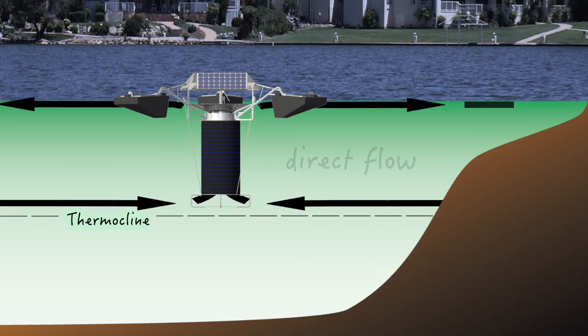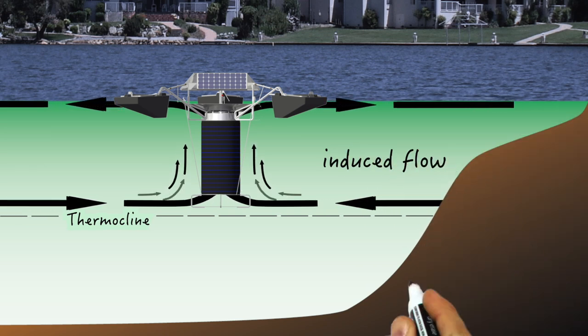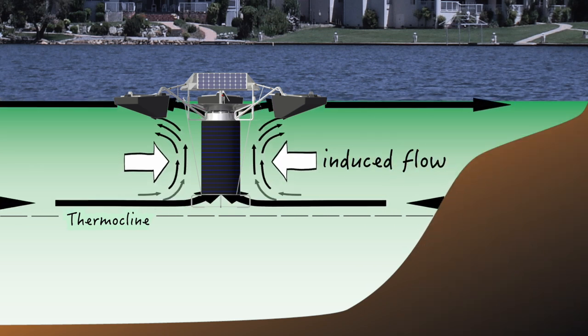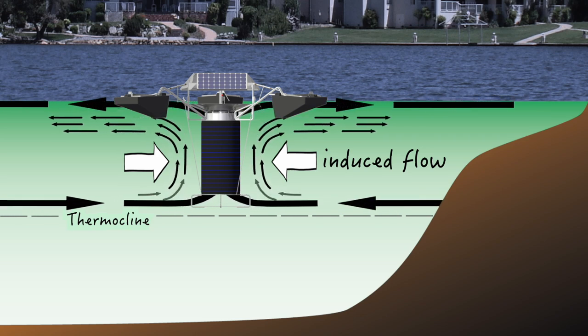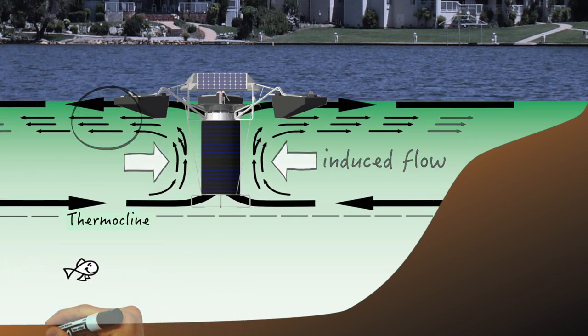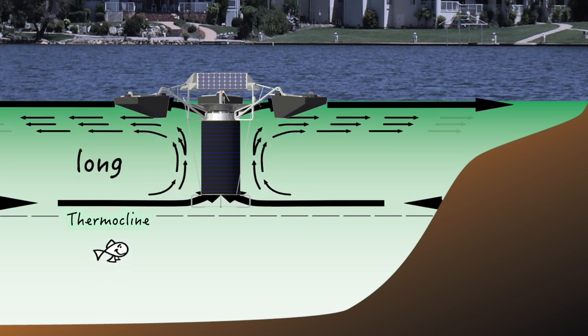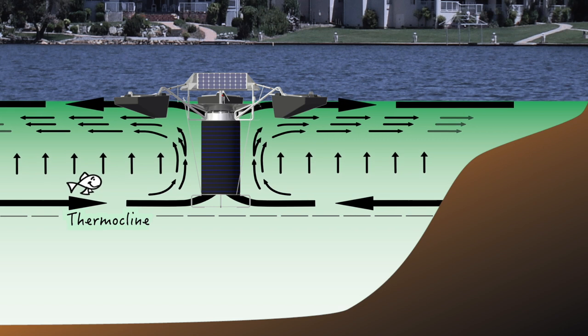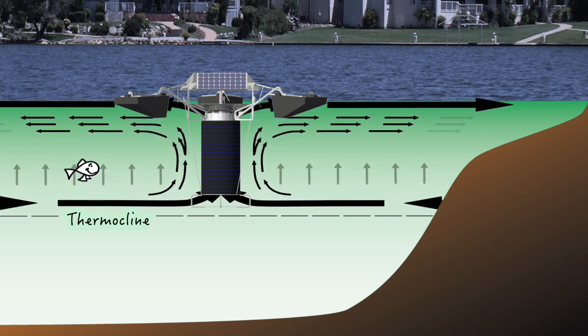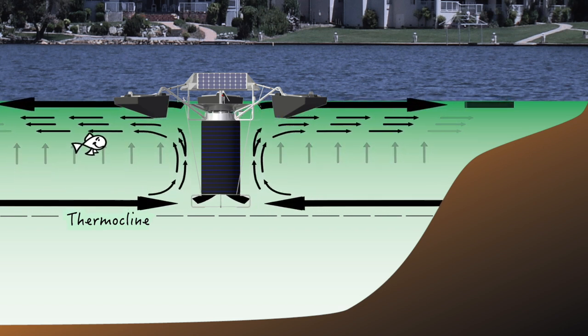Once direct flow is established, the induced flow patterns begin to take shape. A portion of the induced flow will travel upward along the machine but outside the draft tube and meet up with the direct flow near the surface, again traveling long distances. Other induced flow is created throughout the water column as water is circulated to and from the Solar Bee machine.